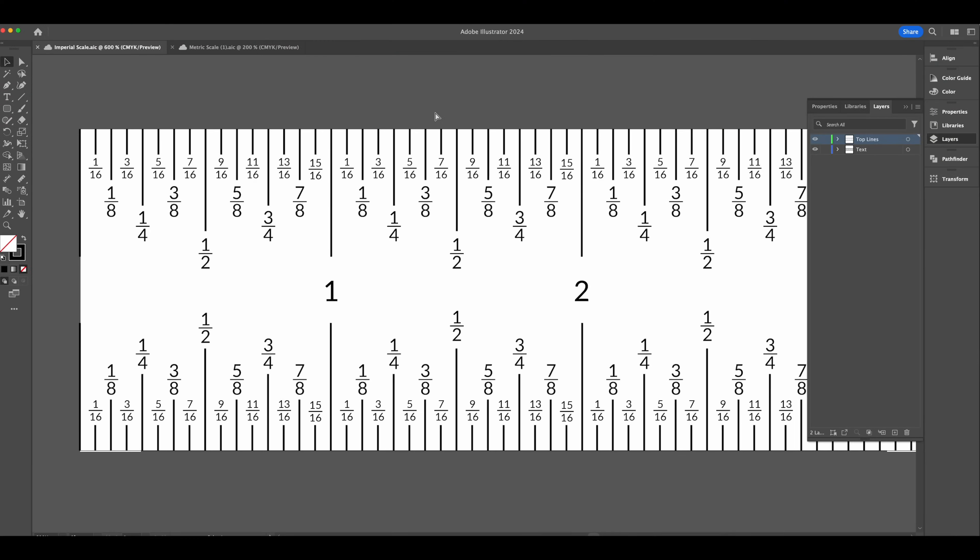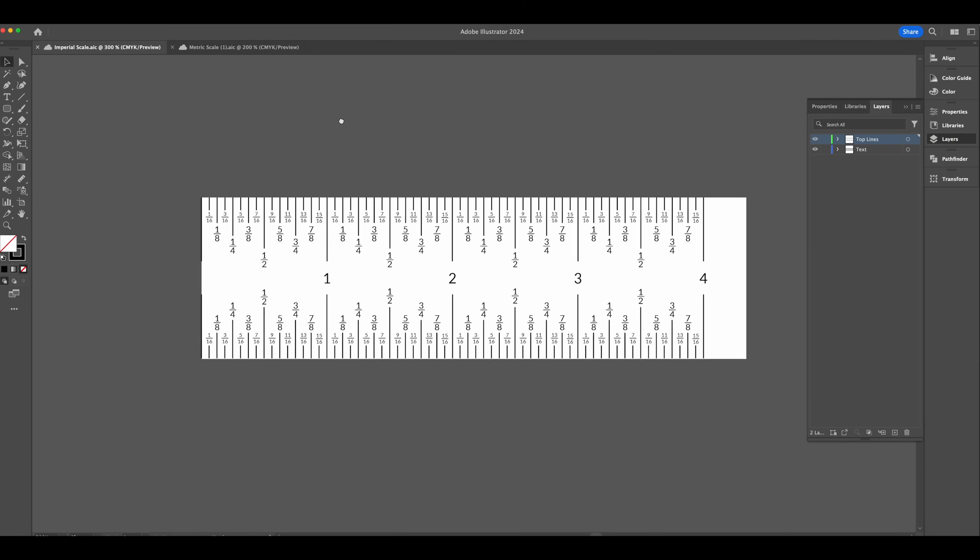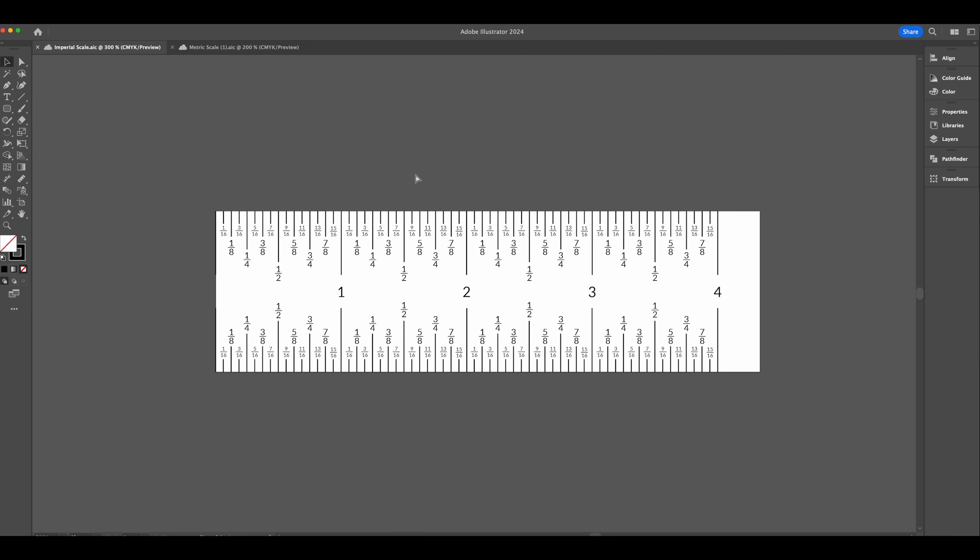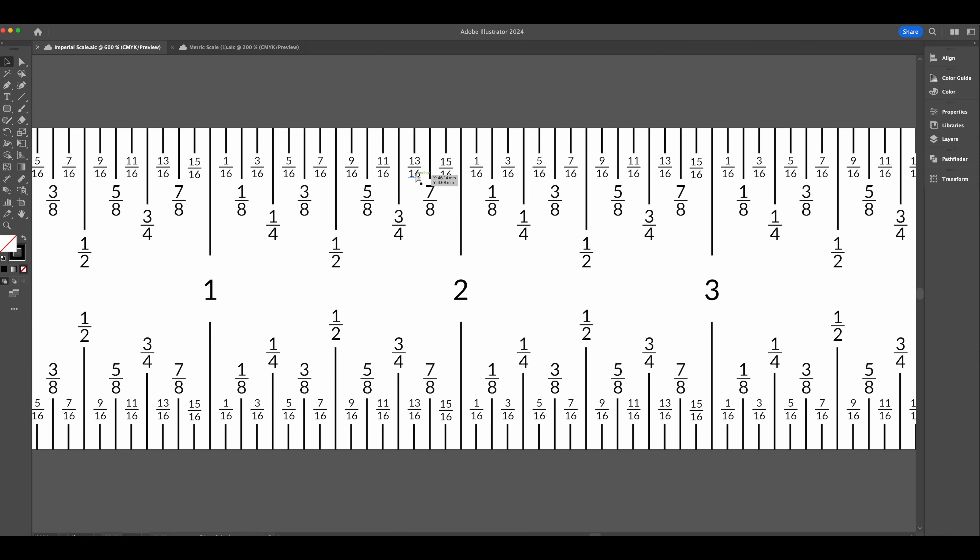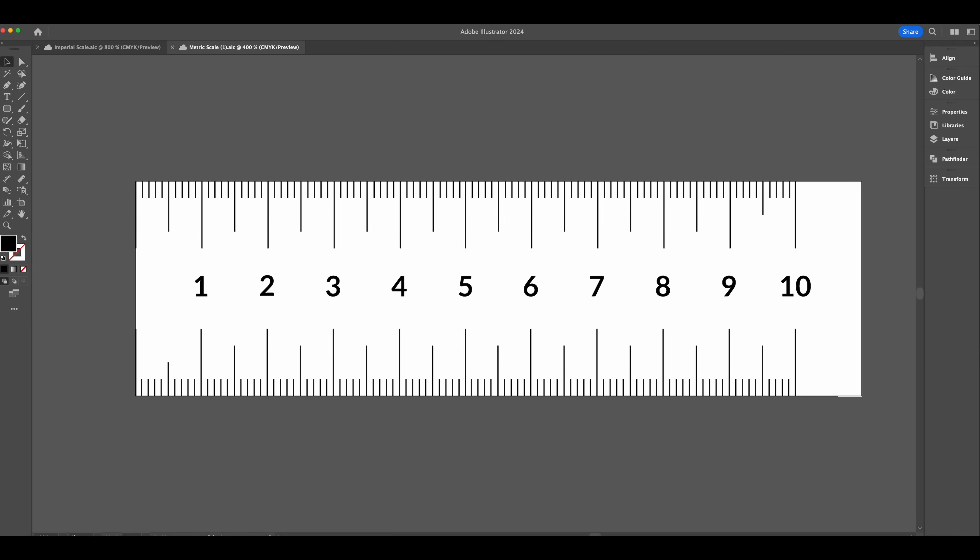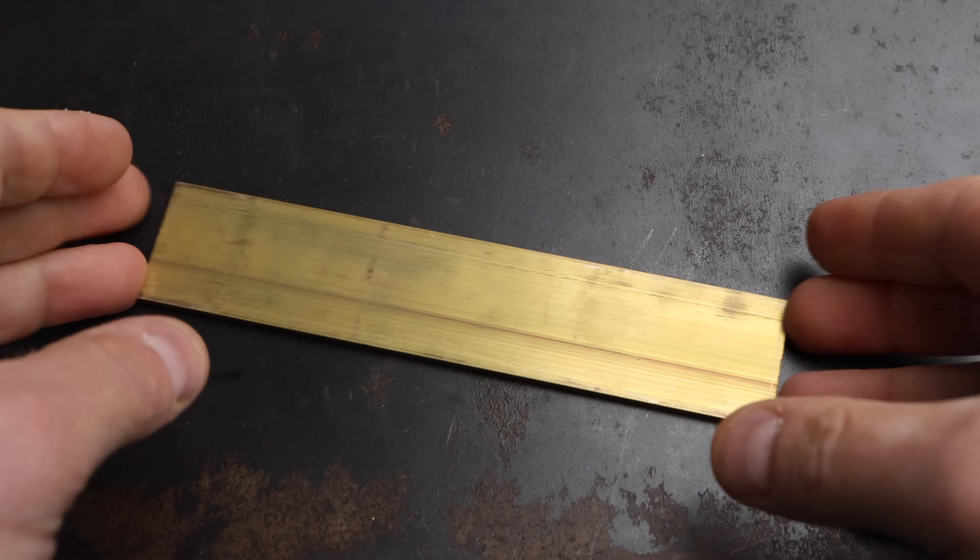At this point, I don't know if this laser is going to be accurate enough to be able to create scales that are going to be truly useful. So I've headed over to Illustrator here and I've created some scales, a metric one and an imperial one. And we're going to burn these into a piece of brass and make ourselves a workshop scale or ruler, as we like to say here in the UK, as a test.